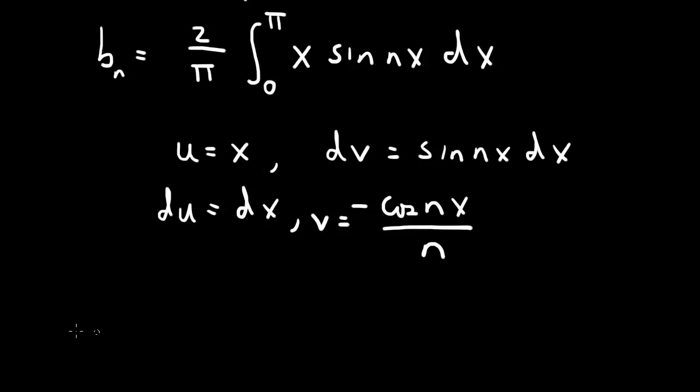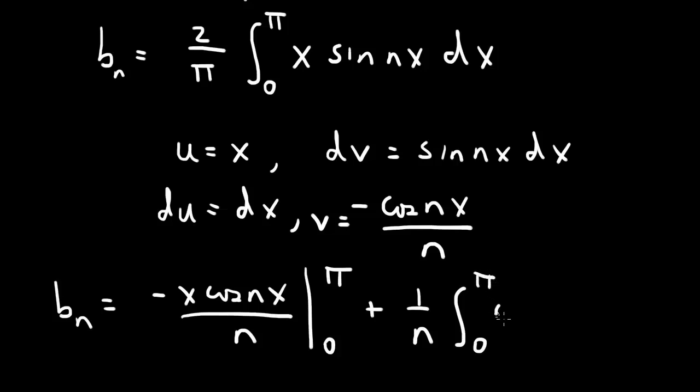So we have this integral, then. So bn is equal to uv. So minus x cosine n x over n, evaluated between zero and pi, minus vdu, minus minus becomes plus vdu. So we have a 1 over n, the integral from zero to pi, cosine n x dx. And that's the integral of zero to pi, x sine n x dx. And don't forget, we have this factor of 2 over pi. So this whole thing gets multiplied by 2 over pi.